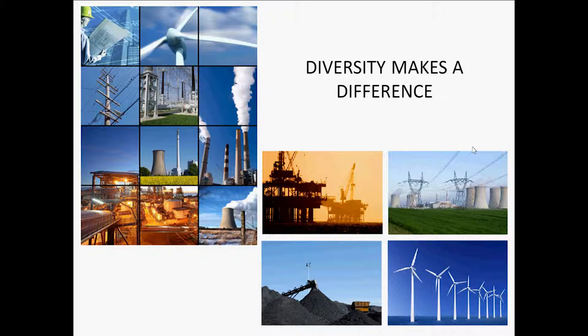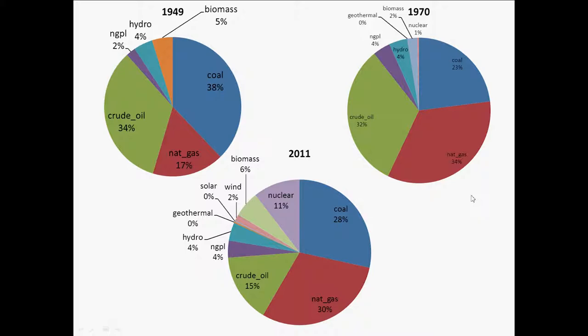Looking at diversity over time: in 1949 a very large dependence existed on coal and oil, with natural gas just beginning to emerge and GPL — natural gas plant liquids. From 1949 to 1970 we see a slight increase in diversity, with the emergence of nuclear power at one percent and very small geothermal presence. Between 1970 and 2011 we see a large increase in diversity — the pie chart becomes more diverse, with solar, wind, biomass, nuclear now at eleven percent, and natural gas rising from seventeen percent in 1949 to thirty percent in 2011.